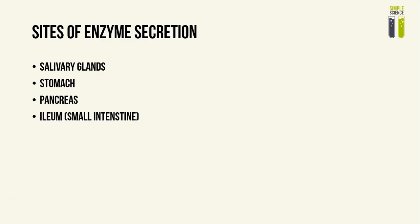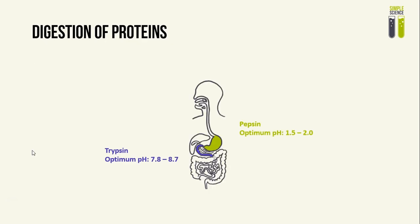The main sites of enzyme secretion for digestion include the salivary glands, the stomach, the pancreas, and the small intestine — specifically the ileum. For digestion of proteins, there are two proteases that are secreted: the first one being pepsin, the second one being trypsin.